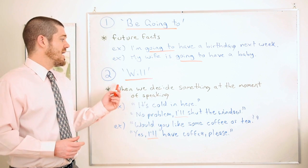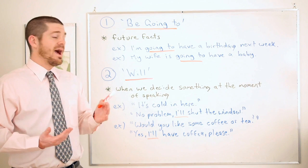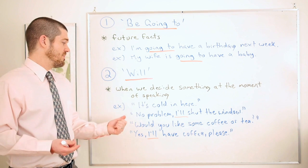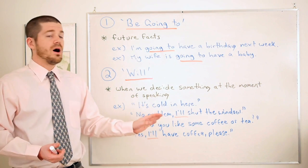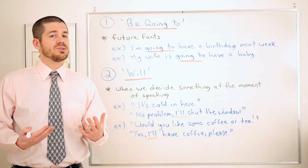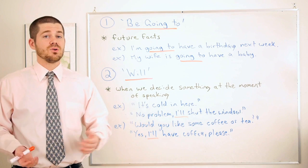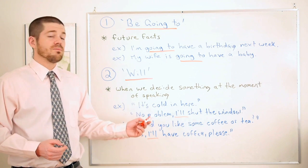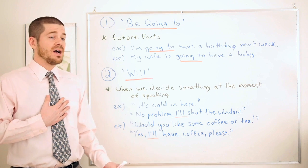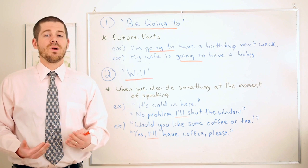Now let's look at situations where we use 'will.' The first is when we decide something at the moment of speaking. For example: 'It's cold in here.' 'No problem, I'll shut the window.' Nothing was decided in advance — I made that decision the moment my friend spoke. Another example: a waiter asks, 'Would you like some coffee or tea?' and I decide right then: 'I'll have some coffee, please.'